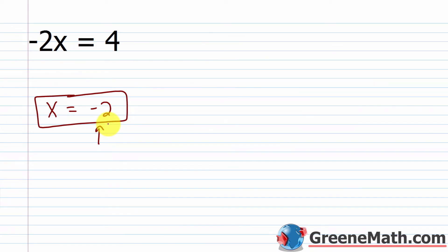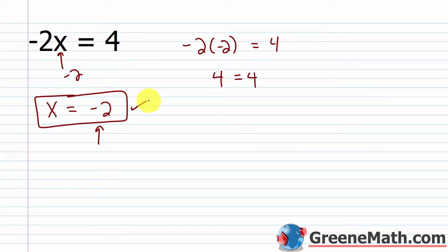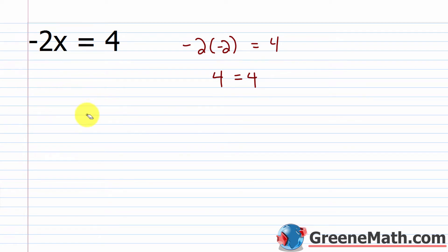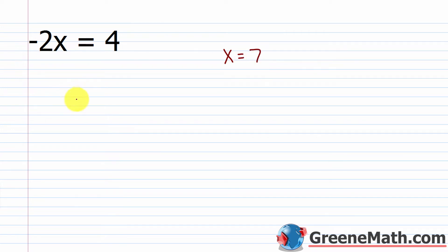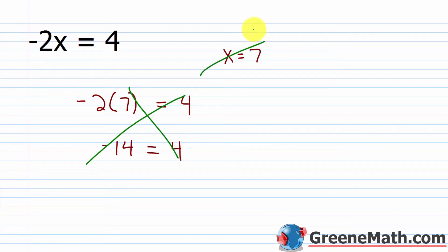If x equals negative 2, then negative 2 times negative 2 equals 4, and the left side simplifies to 4, so 4 equals 4 — that checks out. But if I choose anything else for x, this is no longer true. If x equals 7, negative 2 times 7 is negative 14, not 4. Only if I use x equals negative 2 will this equation be true.